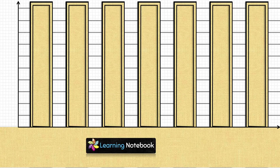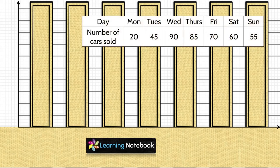Now first, let's decide upon the scale to represent this data. Here, number of cars sold is between 20 and 90. It is difficult to mark 90 points on this vertical line. So we need to decide on a scale.